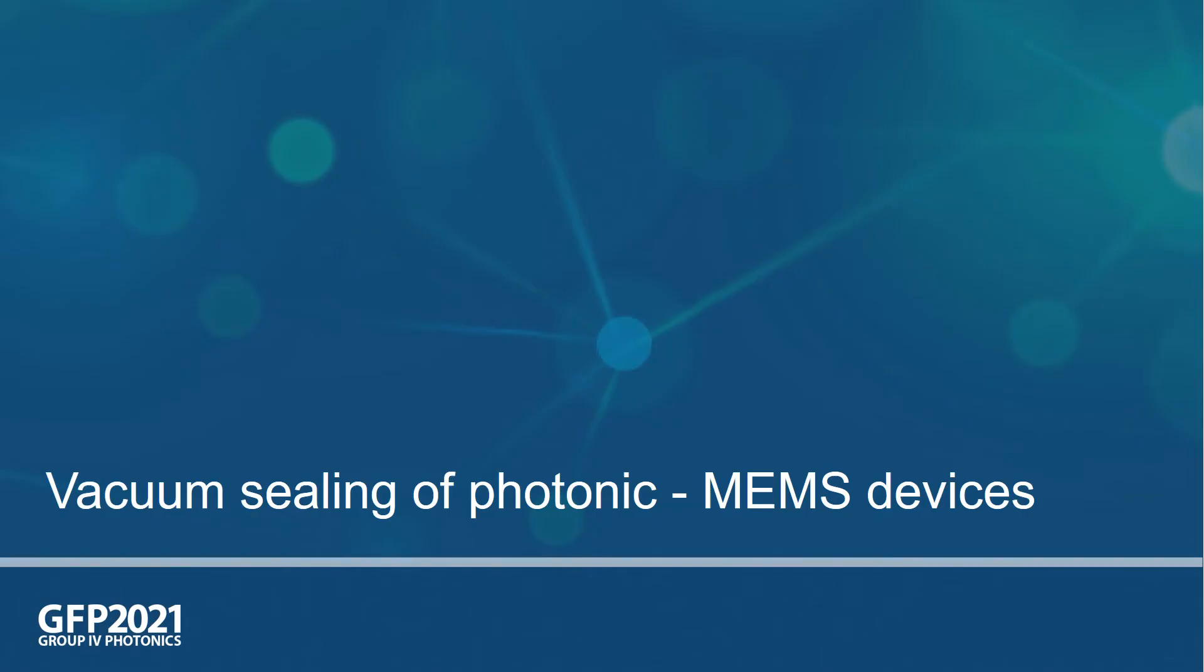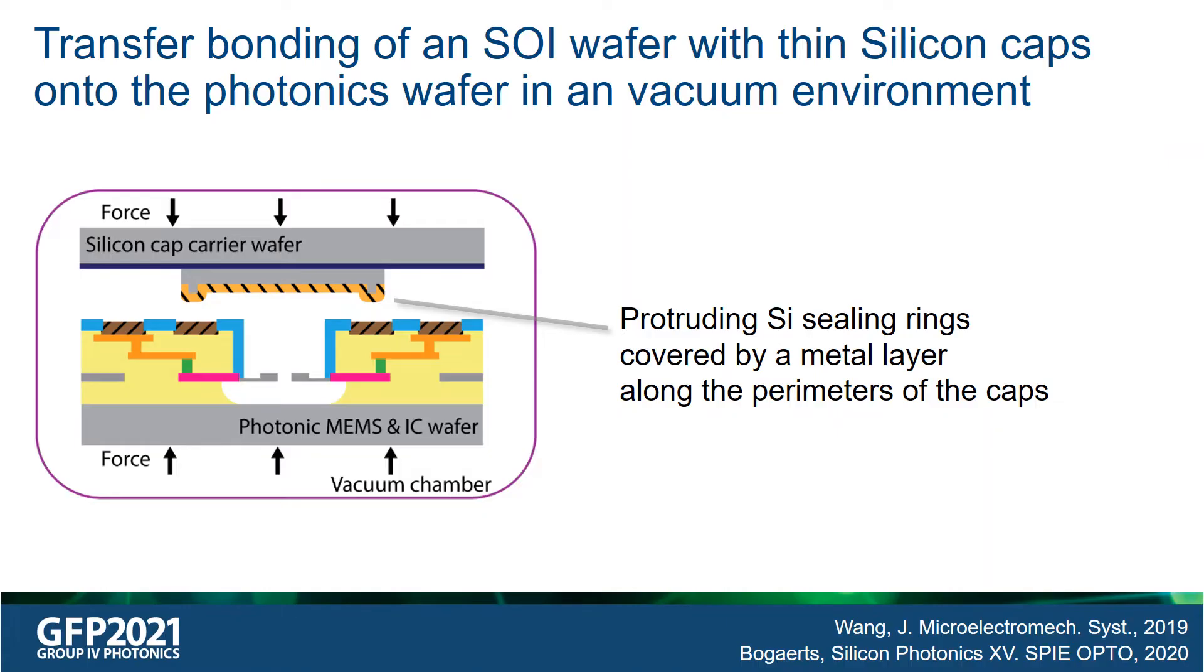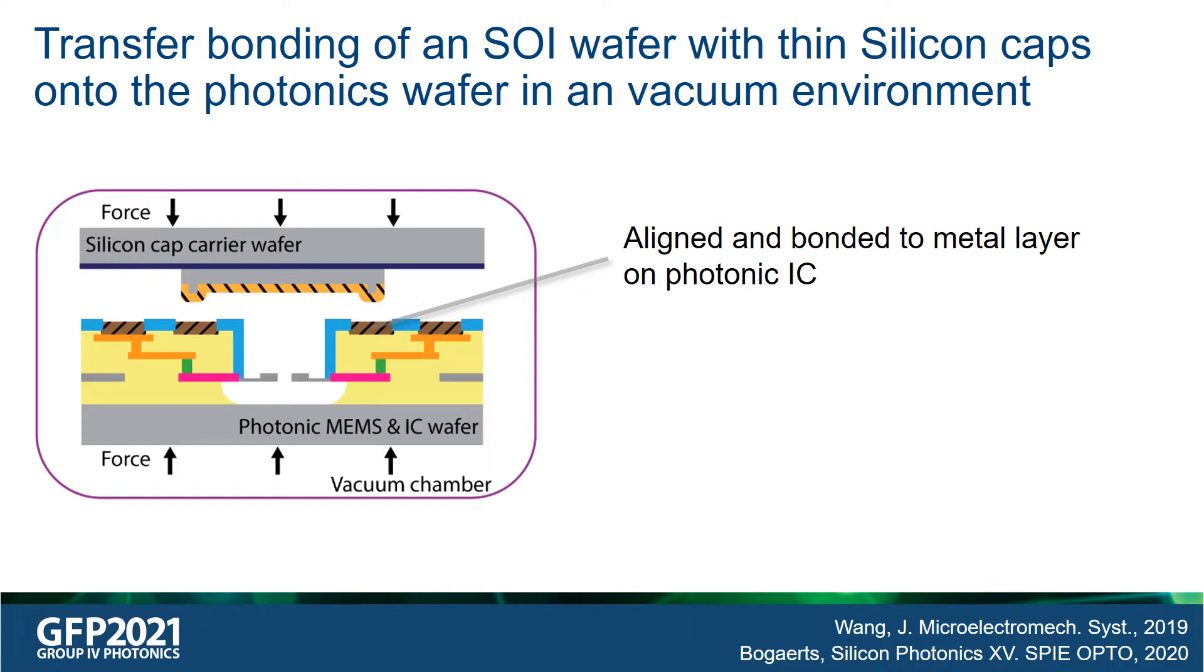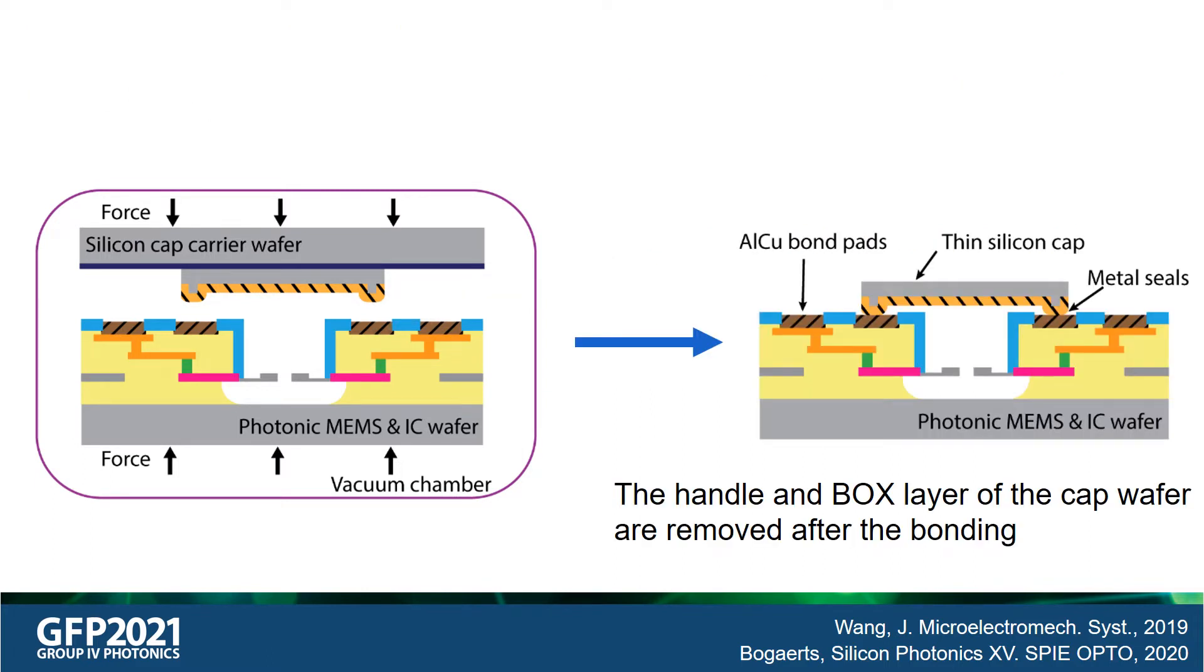We also perform vacuum packaging of the MEMS phase shifter. This is done by thermal compression transfer bonding of an SOI wafer that contains thin silicon caps to a photonics wafer that contains our MEMS components. The bonding process is carried out in a vacuum environment as shown in the schematic. From the schematic, we also see that the silicon caps contain sealing rings which are covered by a metal layer. The sealing rings on the cap wafer are aligned and bonded to metal layers on the photonic IC, thus forming enclosed cavities. Following this, the handle and the box layer of the silicon cap wafer are removed using dry etching.